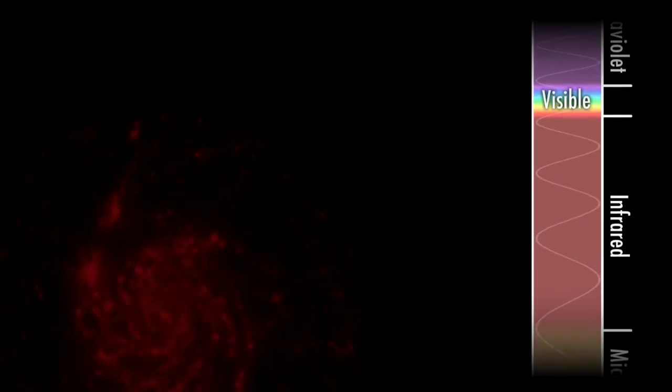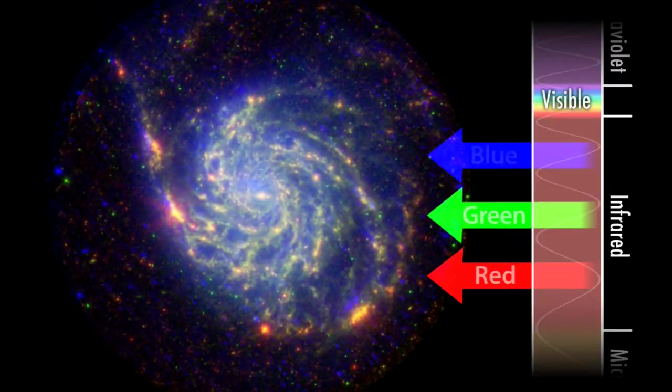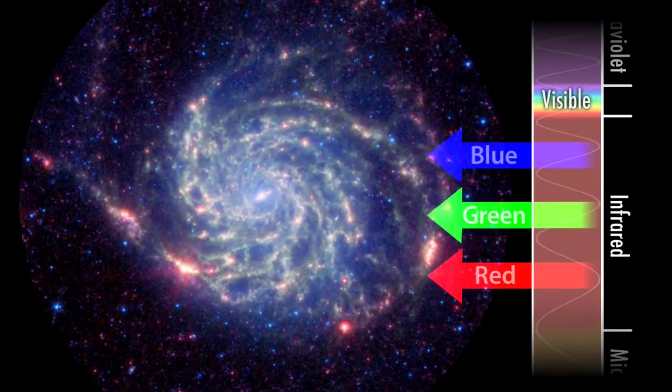Because of the way our eyes work, we can break down any color image into its red, green, and blue components. But the colors we display can come from any part of the spectrum. For instance, this Spitzer image of the pinwheel galaxy draws the imagery entirely from the infrared spectrum but presents them in human-friendly colors.